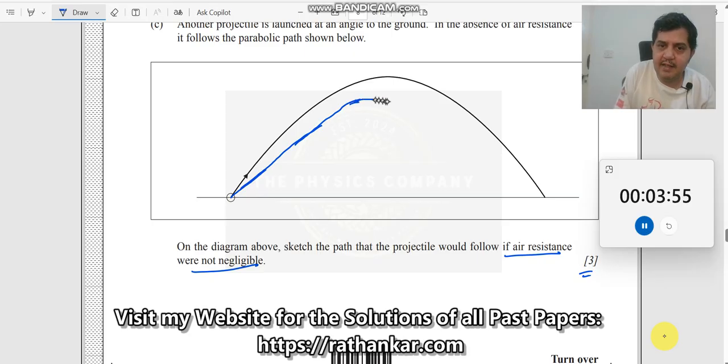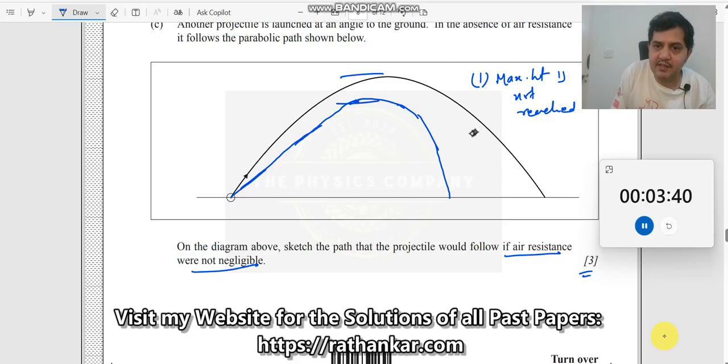Now you see, this is the first point: maximum height is not reached. This should be shown very clearly. See, this is the maximum height here, not reached. The second point is that the range is not reached.